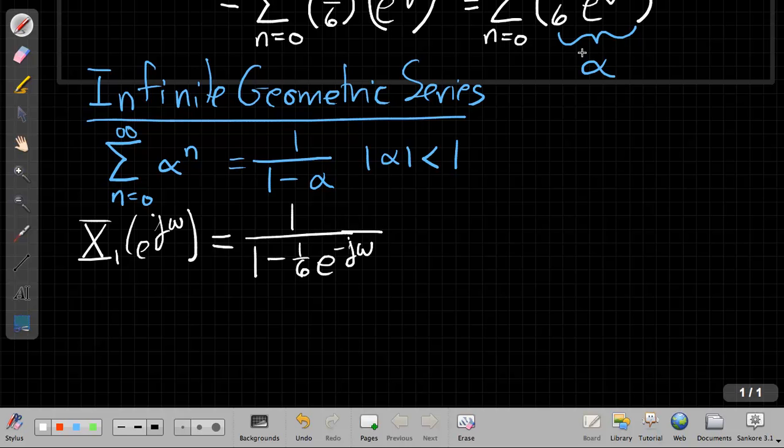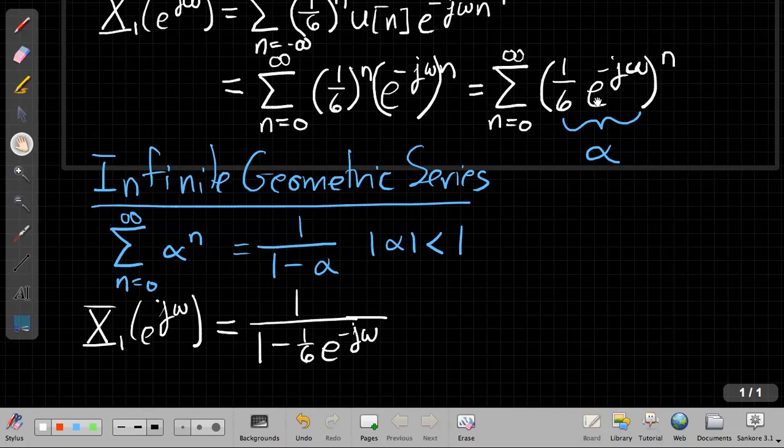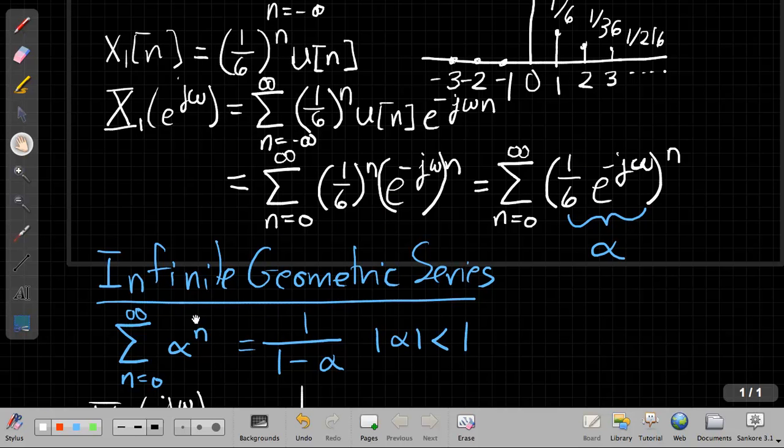where omega is my discrete time frequency value of 1 over 1 minus 1 sixth e to the minus j omega. And this works because the magnitude of 1 sixth e to the j omega, this thing up here, this alpha has a magnitude less than 1 because the magnitude of this part is 1 sixth and the magnitude of e to the minus j omega is 1. So this is my discrete time Fourier transform for this simple exponential sequence. And again, a good reminder, this is an infinite geometric series, not because of the amplitude, but because of the length. Because this goes on forever,